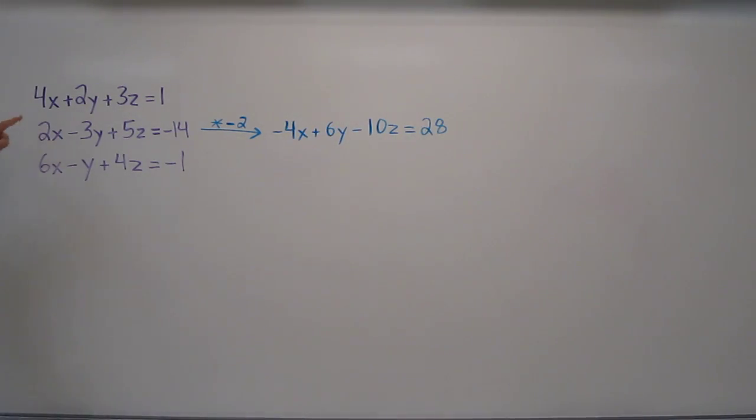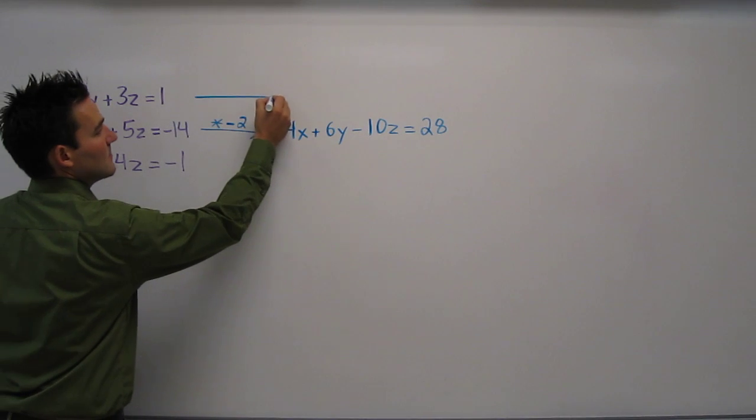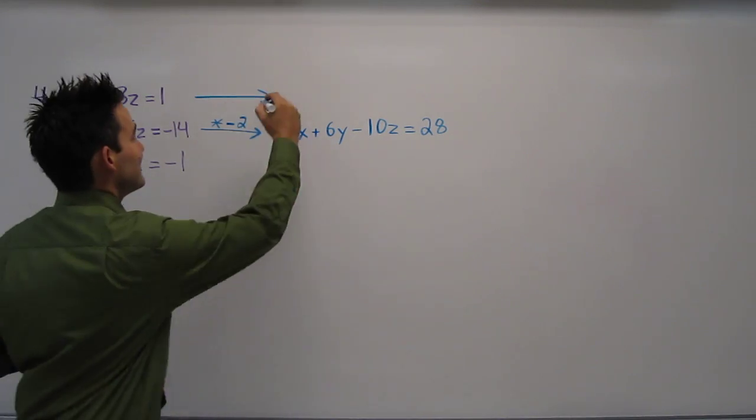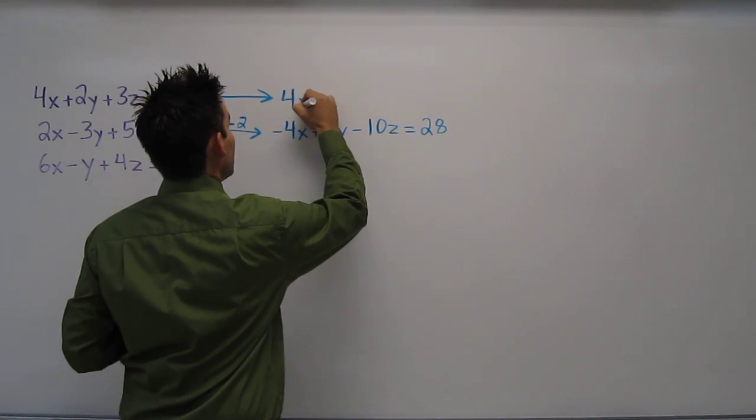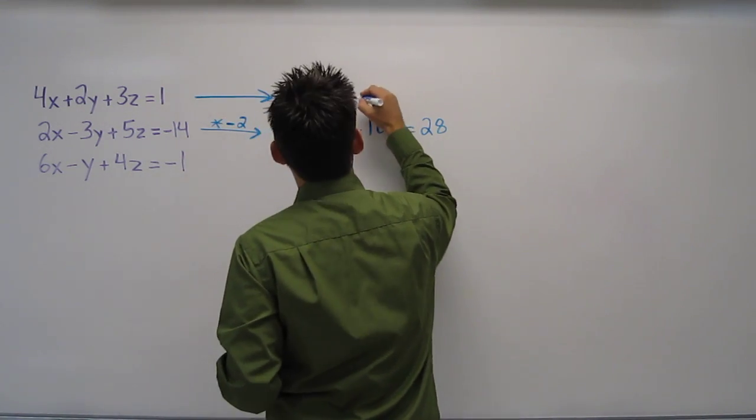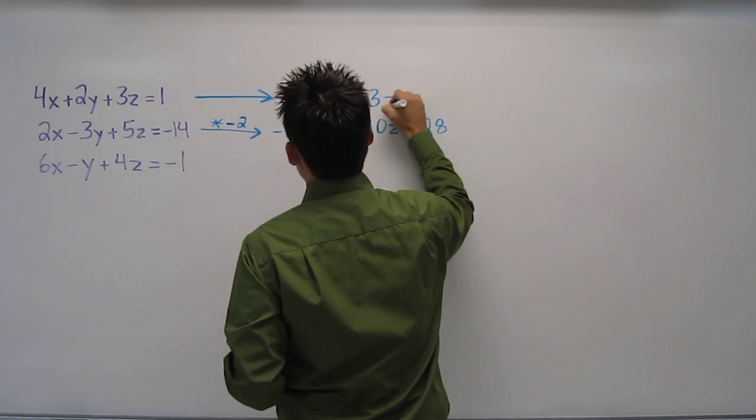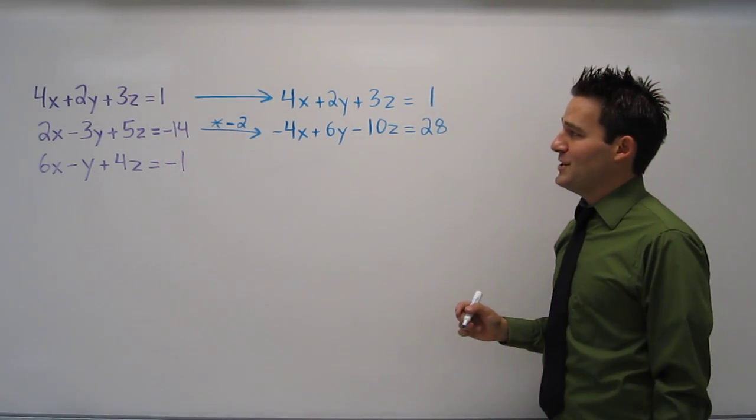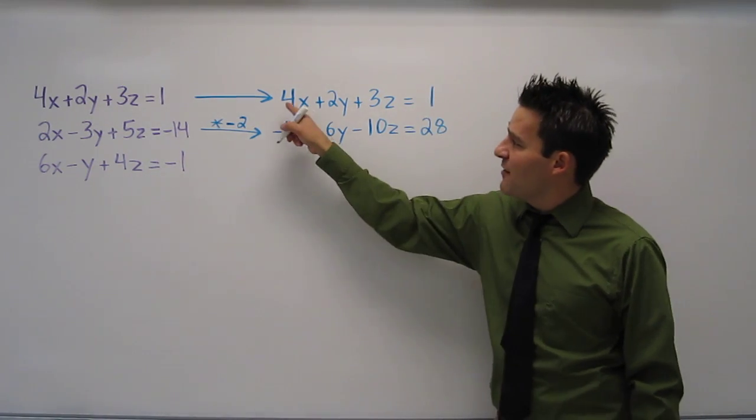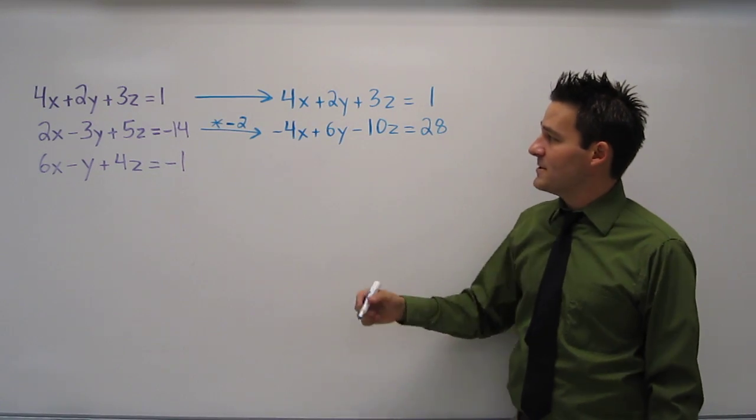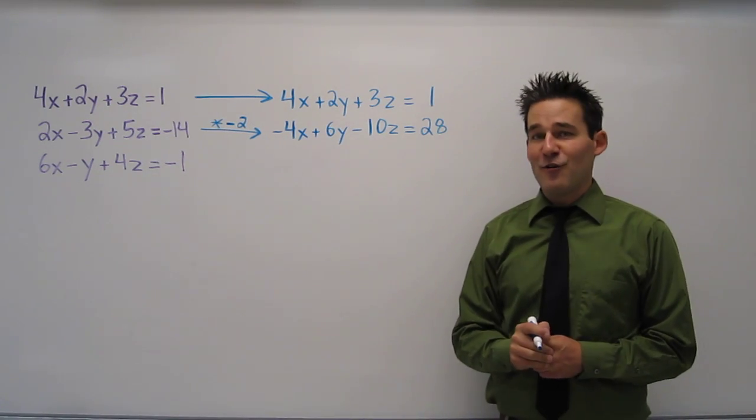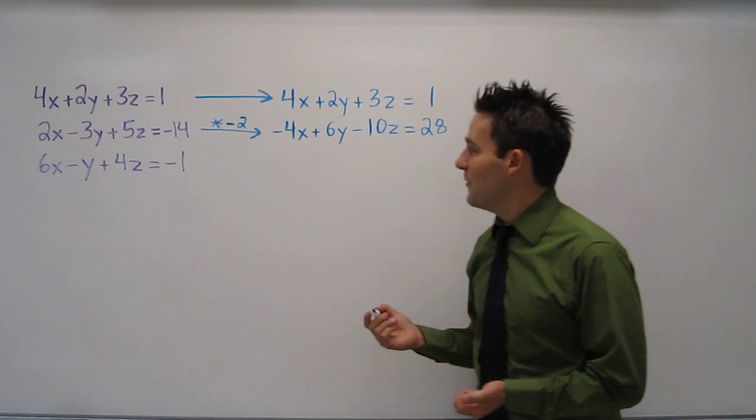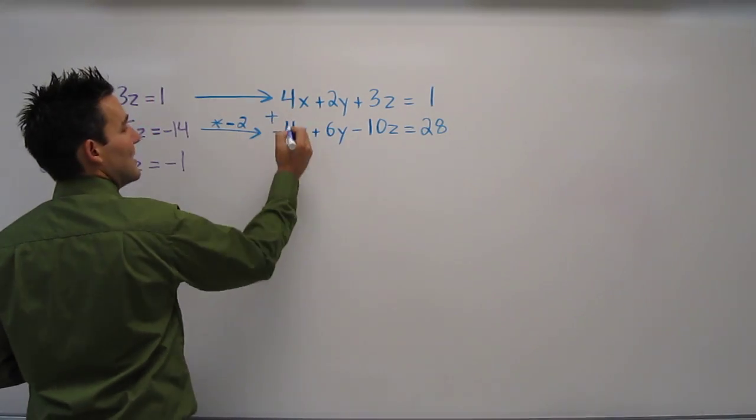The top equation I'm simply going to rewrite again. I'm not going to do anything to it. 4x plus 2y plus 3z equals 1. Now when I add these two equations, we notice that 4 and negative 4 are opposites. Whenever we have opposite coefficients, we can eliminate a variable. So let's do that to eliminate x.